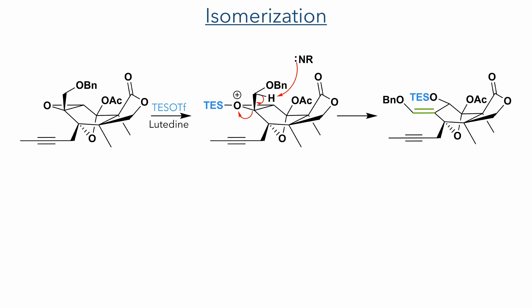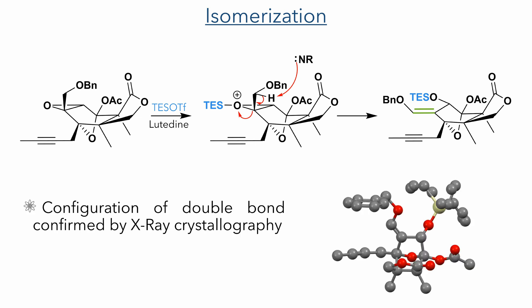With this conformation locked, the authors carried out an isomerisation reaction using TES triflate and lutidine. The TES group binds to the epoxide while the base deprotonates the adjacent proton to carry out an elimination reaction, forming an alkene and a TES-protected hydroxyl group. This produced the alkene as a single isomer, confirmed by X-ray crystallography.